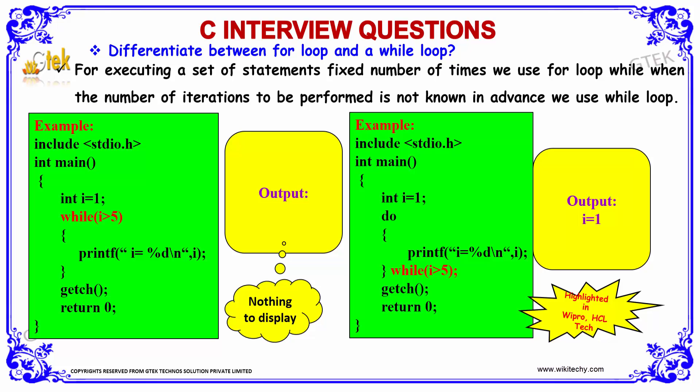Let's see the differentiation between for loop and while loop. For executing a set of statements a fixed number of times, we use for loop. While, when the number of iterations to be performed is not known in advance, we use the while loop.